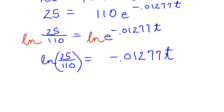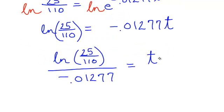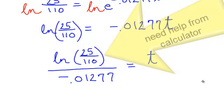We almost have t by itself. Divide both sides by negative point 01277. So with a little bit of algebra work, I have added and subtracted, multiplied and divided. I did have to take the natural log of both sides, but I have found t.